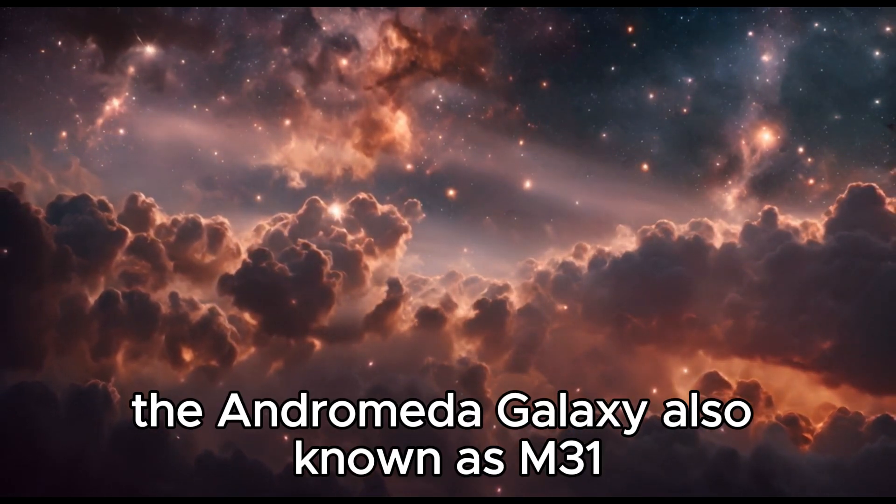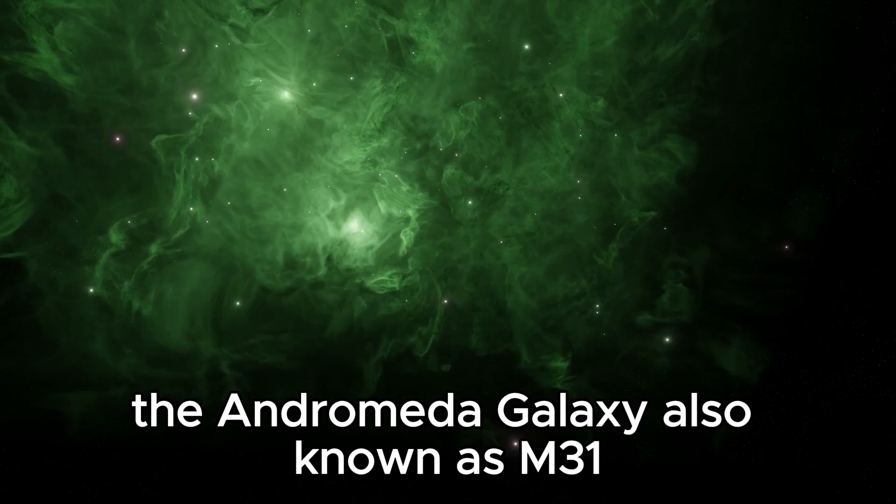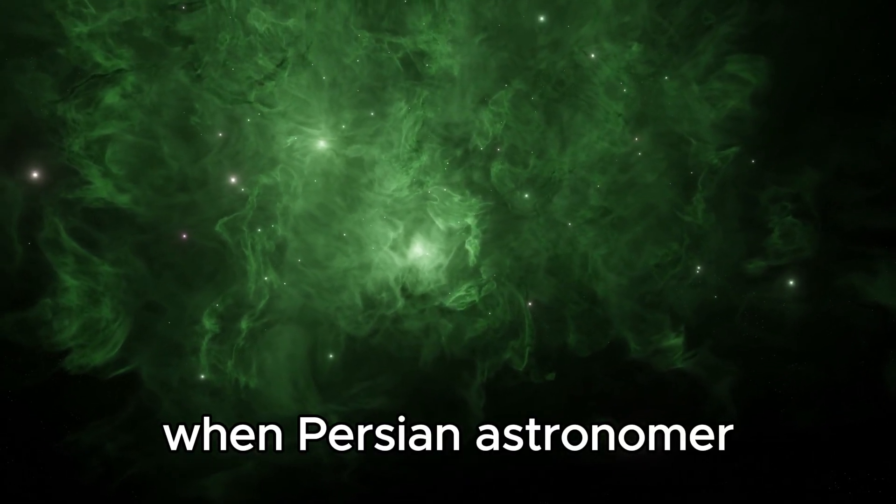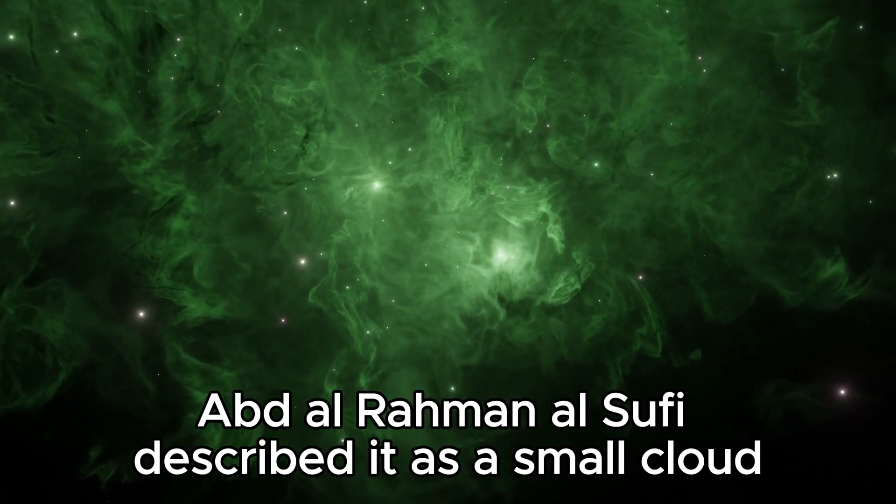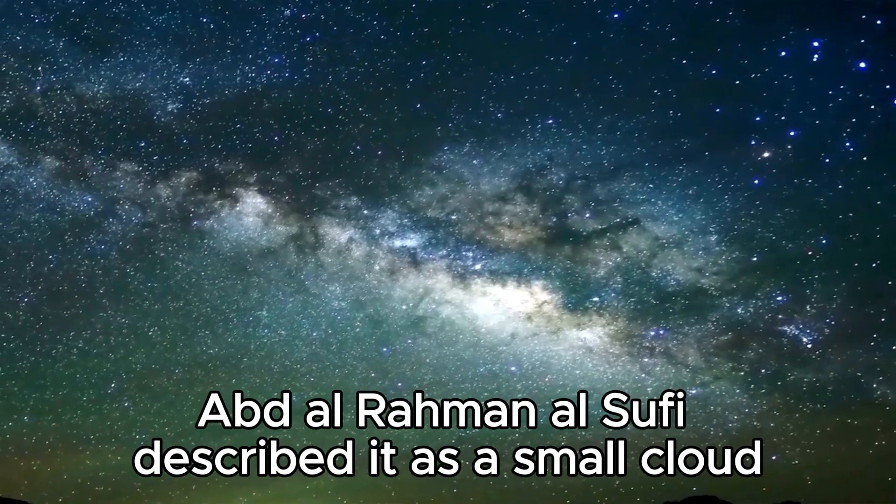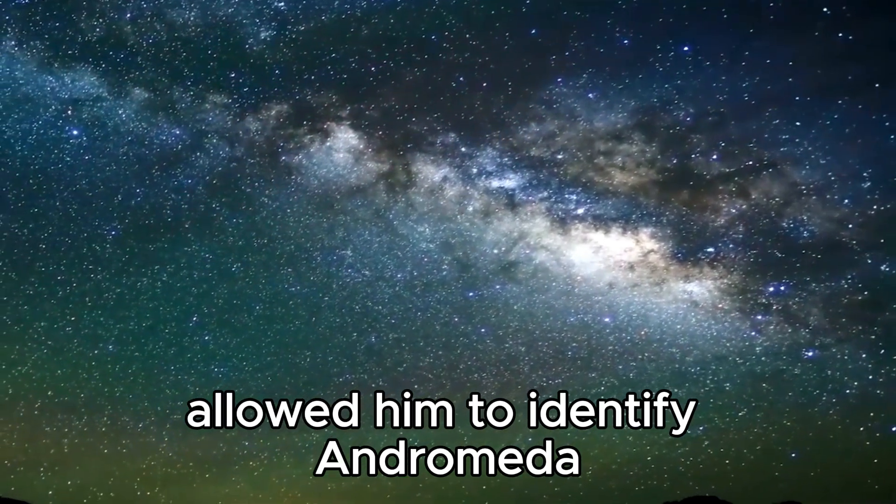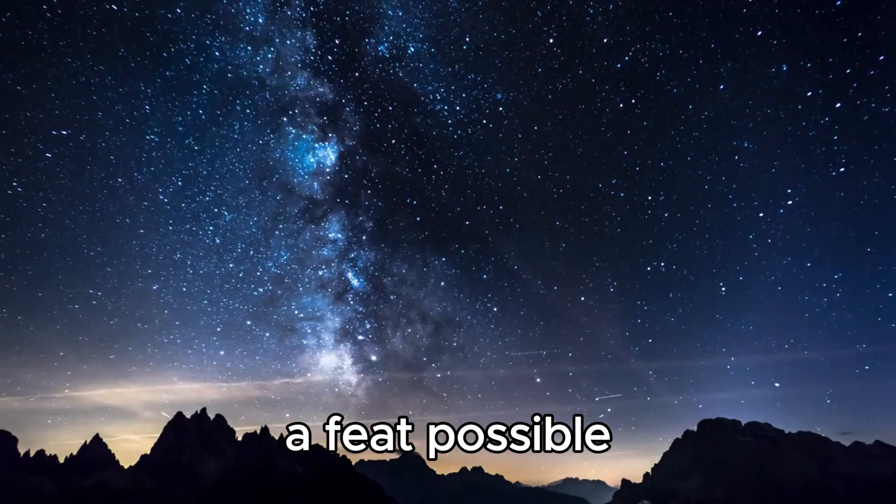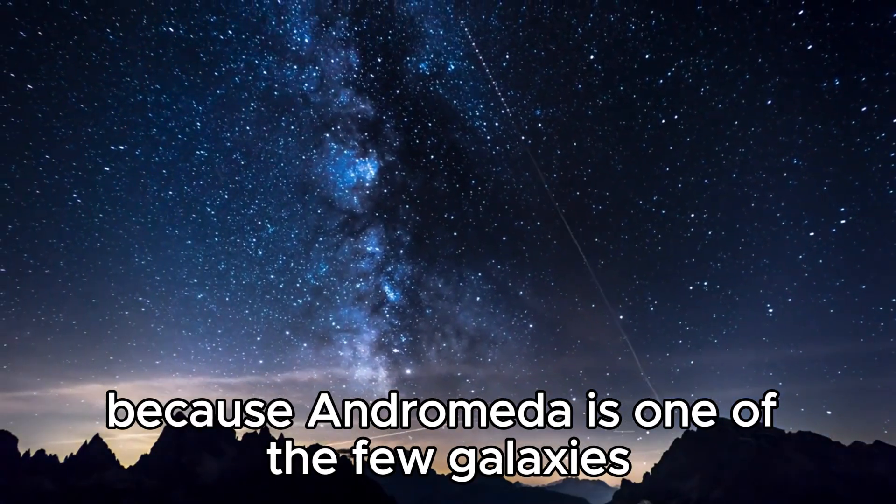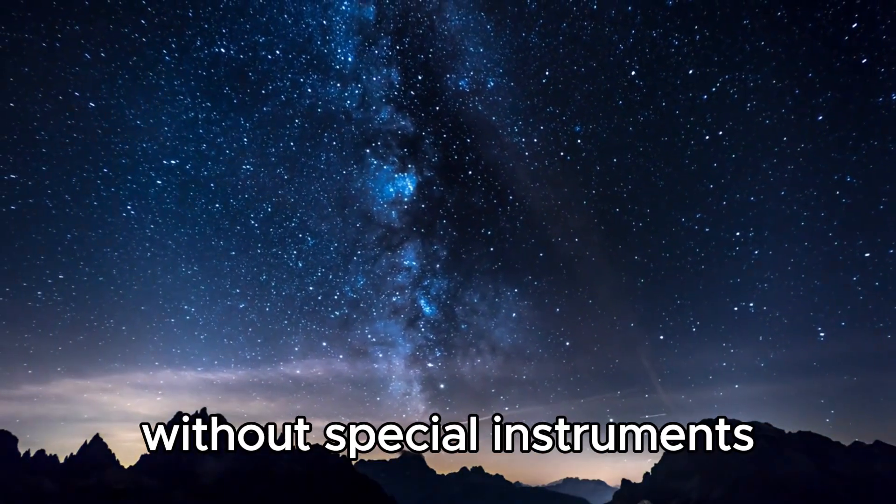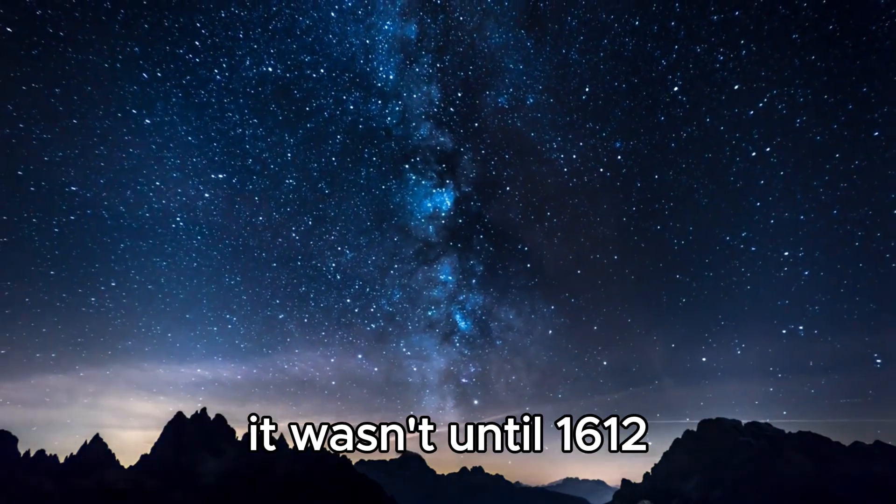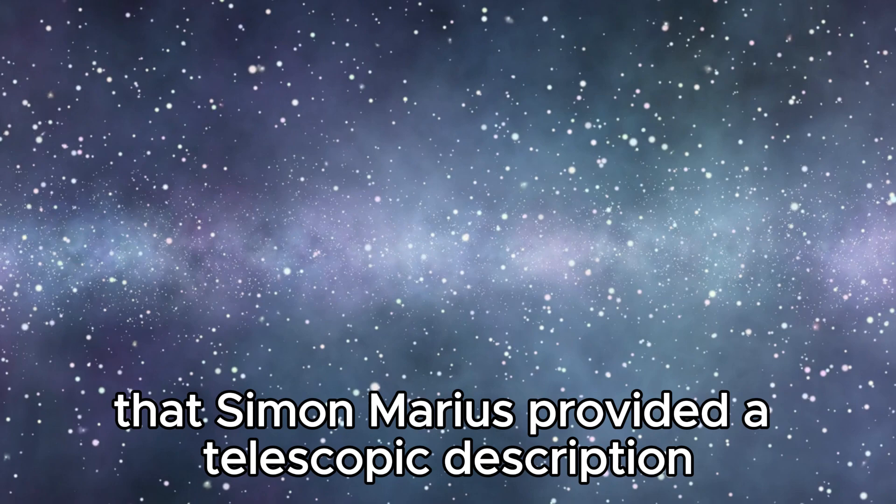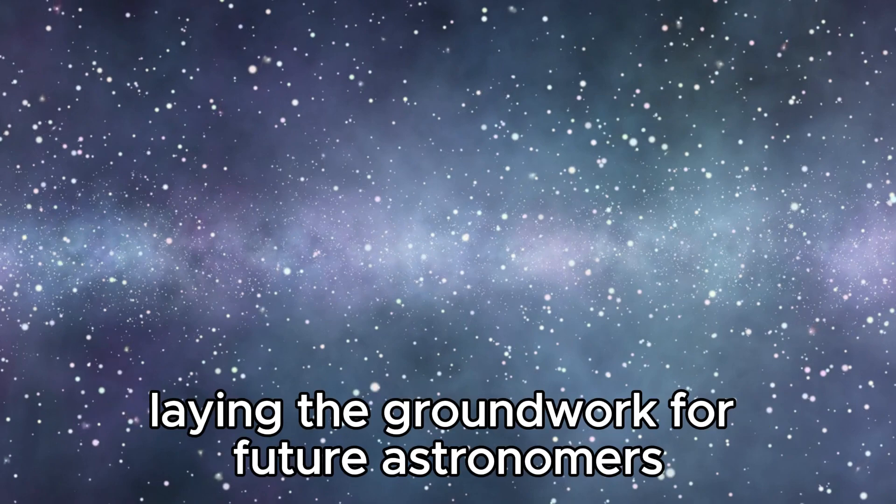The Andromeda Galaxy, also known as M31, has been observed since at least the 10th century, when Persian astronomer Abd al-Rahman al-Sufi described it as a small cloud. Al-Sufi's keen eyesight allowed him to identify Andromeda without telescopic instruments, a feat possible because Andromeda is one of the few galaxies visible from Earth's surface without special instruments. It wasn't until 1612 that Simon Marius provided a telescopic description, laying the groundwork for future astronomers.